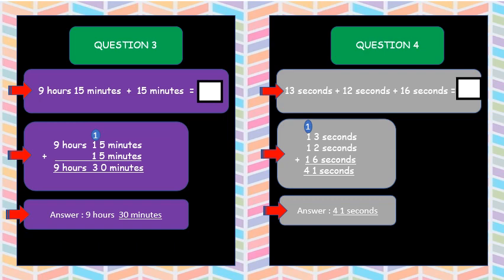Look at another question. Question 3: 9 hours 15 minutes plus 15 minutes. Look at the second step. You do like this. Then you plus. 15 plus 15 equal to 30. Then 9, bring down. So the answer is 9 hours 30 minutes.